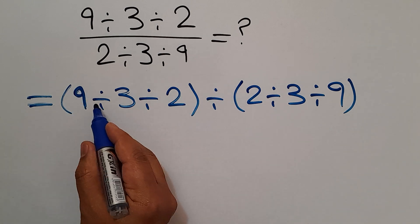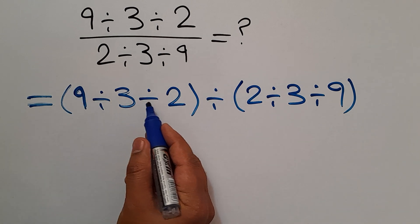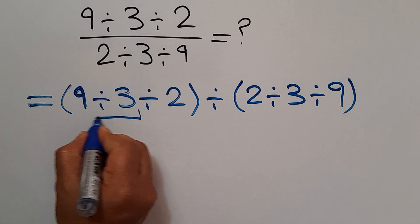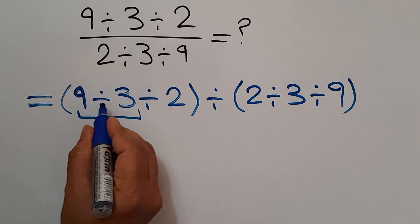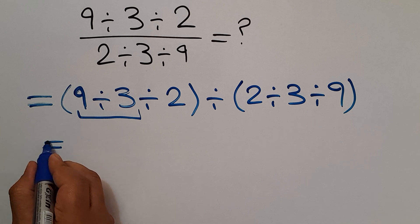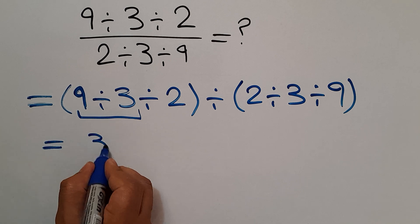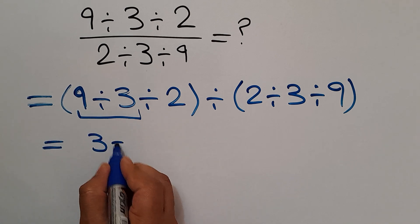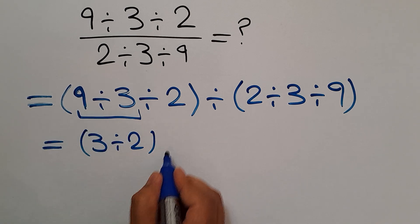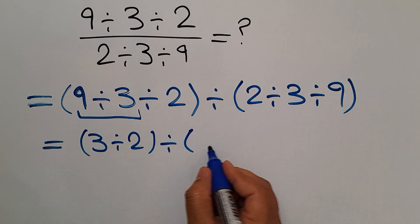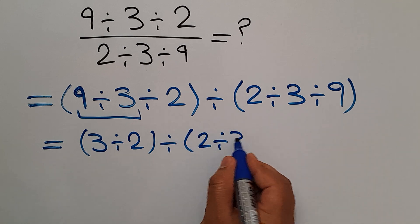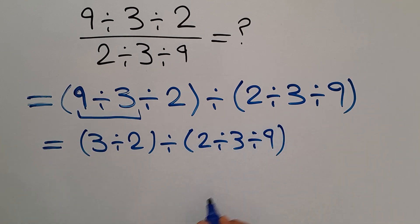Inside the first parentheses, we have two divisions and we evaluate from left to right. So first, 9 divided by 3 which equals 3. So we have 3 divided by 2, divided by the parentheses 2 divided by 3 divided by 9.